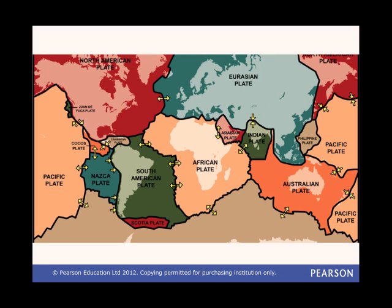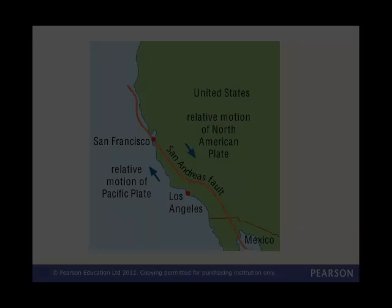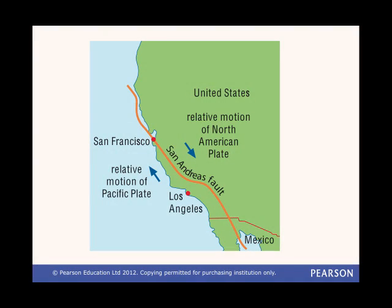And what about when two oceanic plates meet? One gets subducted under the other. This is happening on the boundary of the Philippine Sea Plate and the Pacific Plate. The subduction zone is the Mariana Trench, the world's deepest ocean trench. A conservative plate boundary is where plates are sliding past each other. The most famous example of this is the San Andreas Fault, the boundary between the Pacific Plate and the North American Plate.